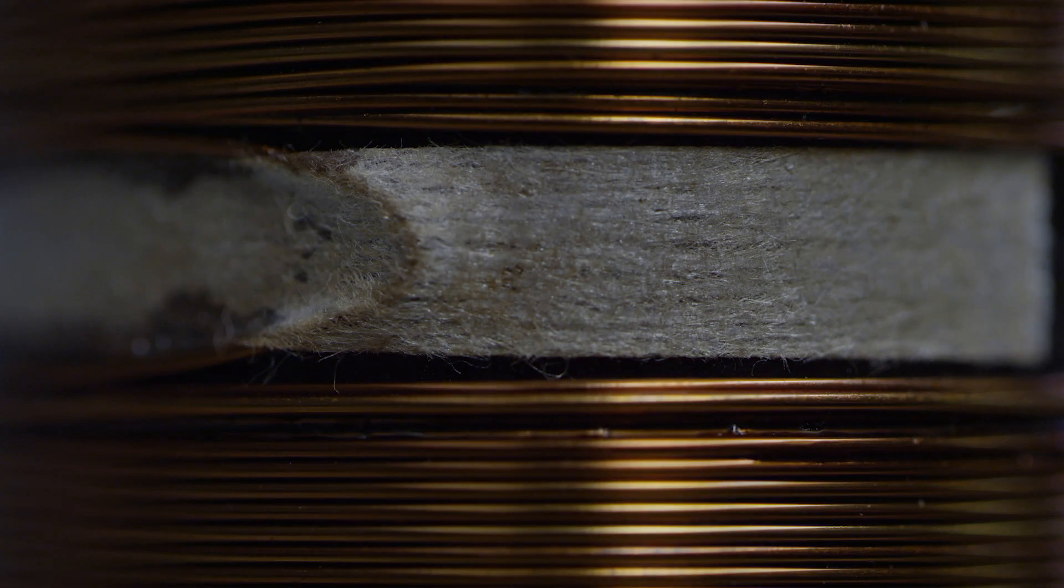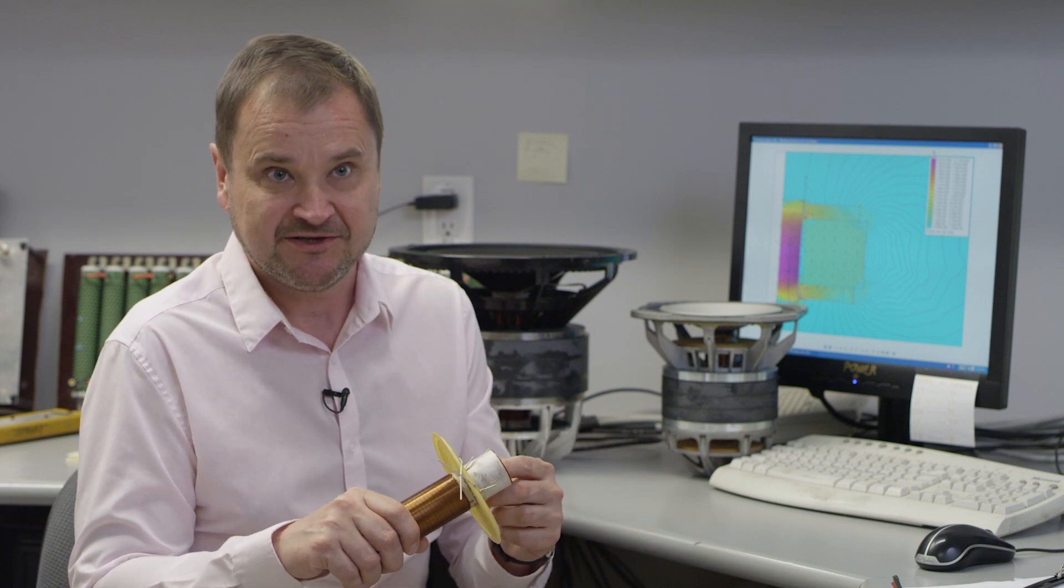When the voice coil magnetic field becomes strong enough, it can reduce significantly or add significantly to the magnetic field of the permanent magnet. And that creates so-called flux modulation distortion.